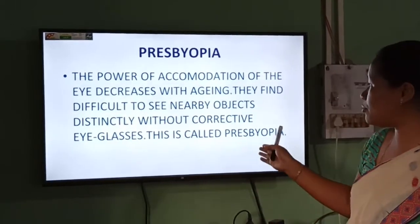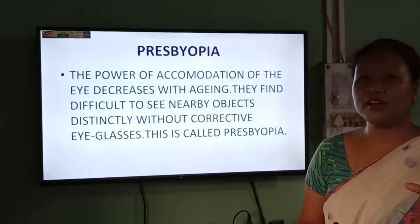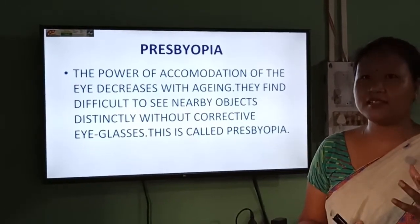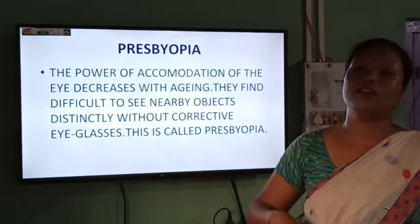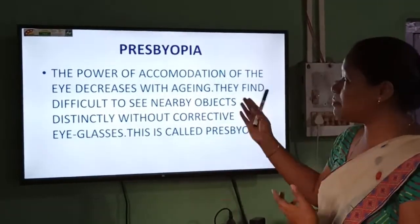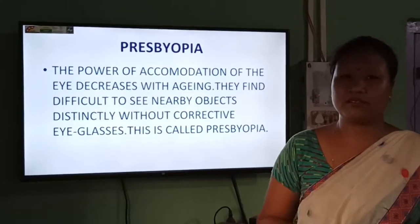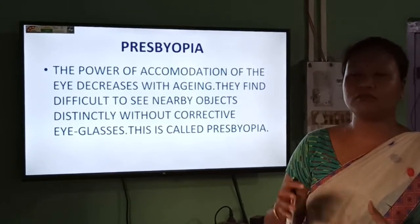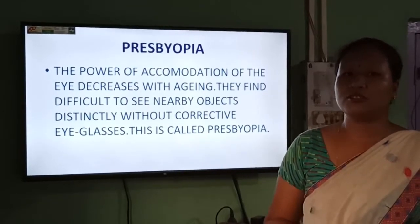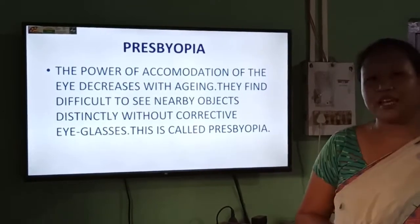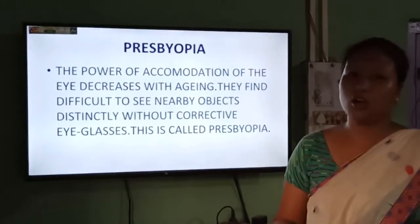The contraction and expansion of the eye lens is done by the ciliary muscles that hold the lens. When people become older, their ciliary muscles become weak and can no longer contract or expand properly. As a result, this problem of presbyopia arises when a person becomes older.